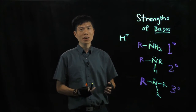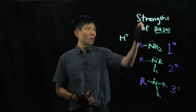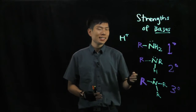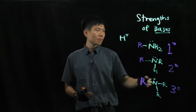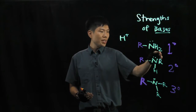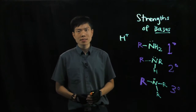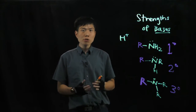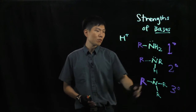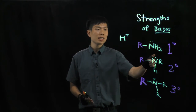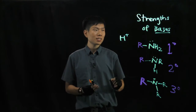Hey guys, so over here you'll be learning about comparing the strengths of bases. Now here you see there are all kinds of amine groups: primary amine, secondary amine, and tertiary amine. You'll notice that one similarity between all these amine groups is that you have nitrogen with lone pairs of electrons that are able to pick up a proton H+.